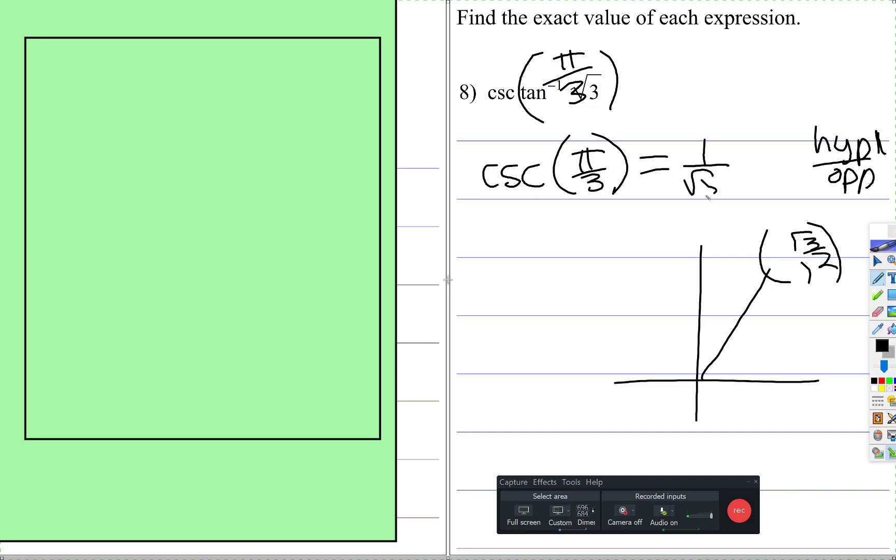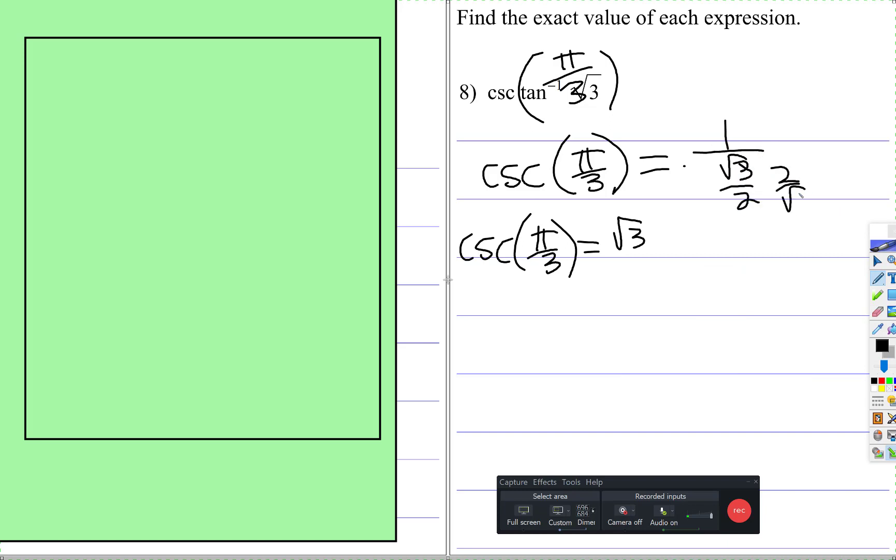So we're going to put 1 over √3/2, so I'm going to multiply top and bottom by 2/√3. So now we have cosecant of π/3 is 1/√3, then we're going to multiply top and bottom by √3. So cosecant of π/3 is 2√3/3.